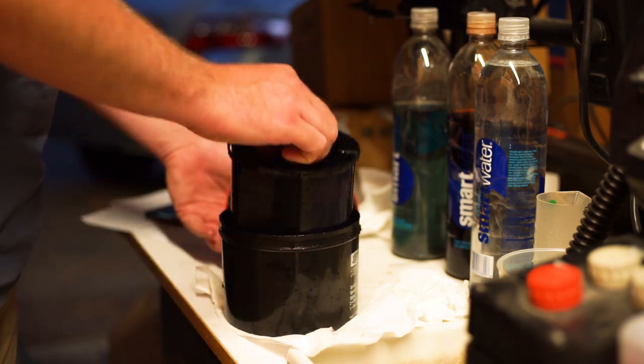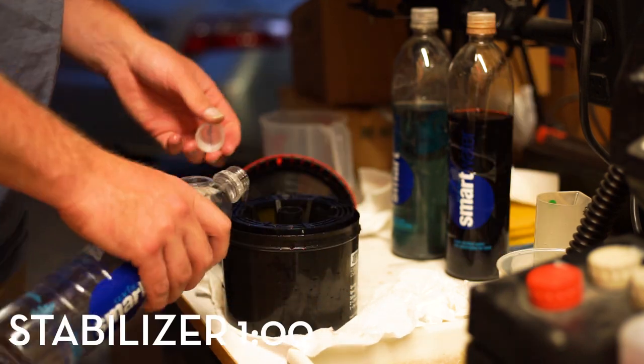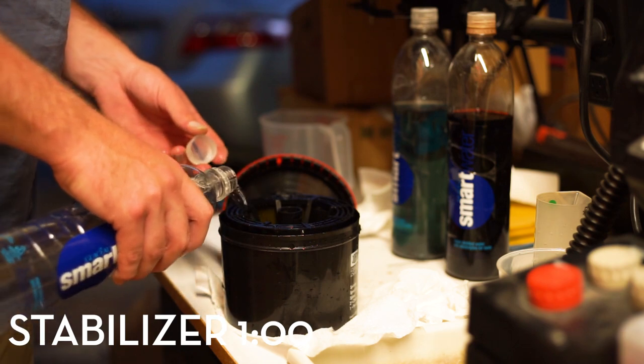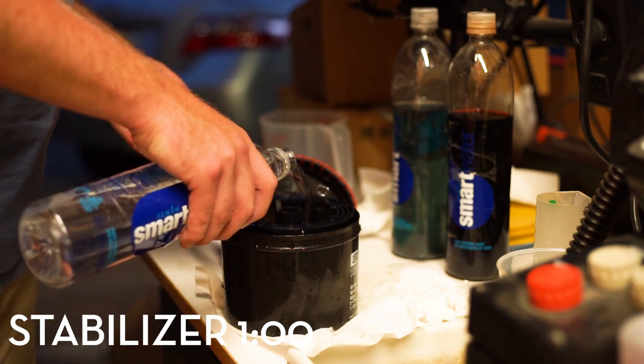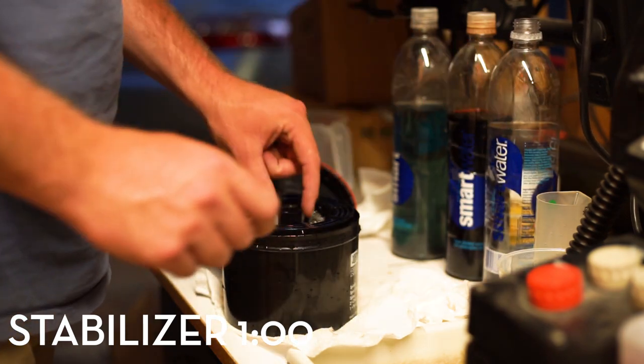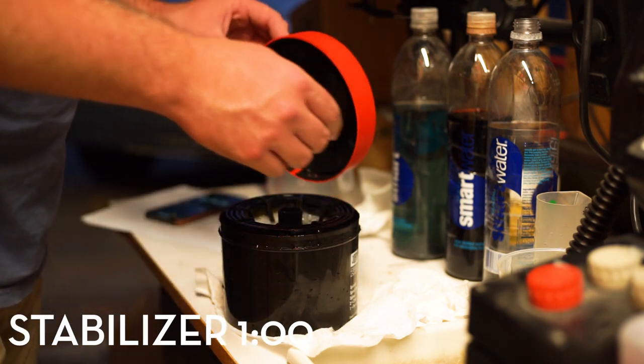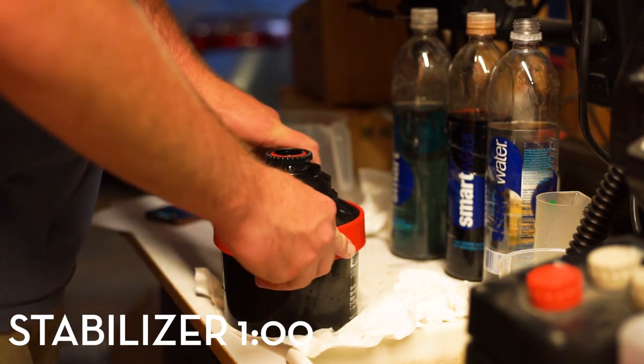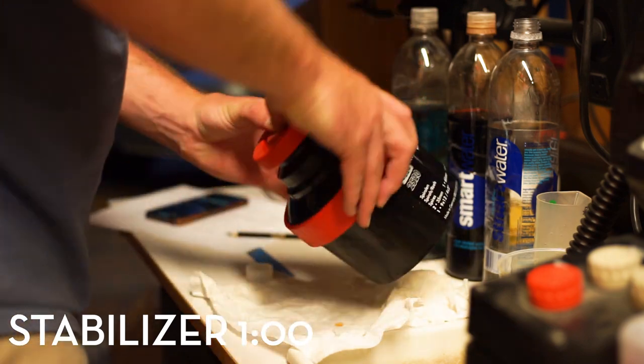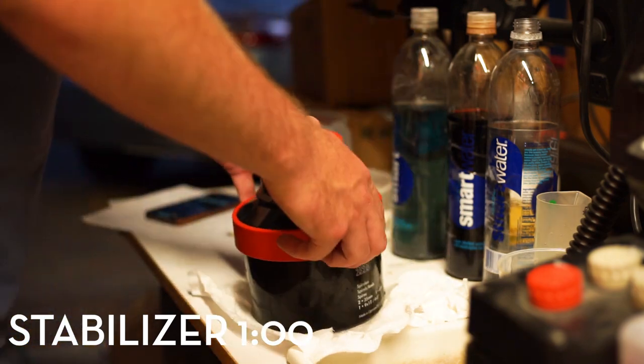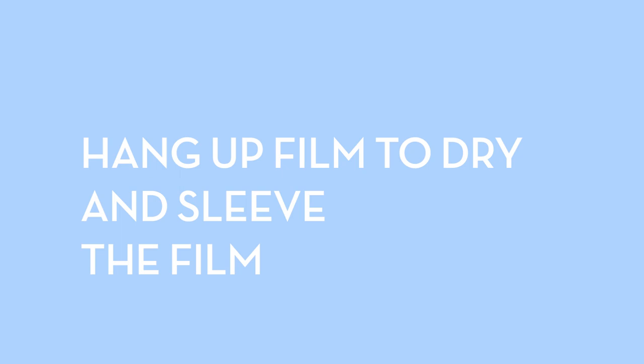Then I pour in my stabilizer, which is kind of a photo flow for it, which basically leaves a soapy feel to the film. You agitate this for a minute, and once you're done with that then you can hang it up and then you get to sleeve them.